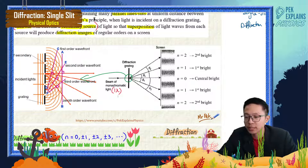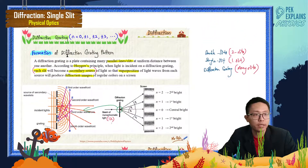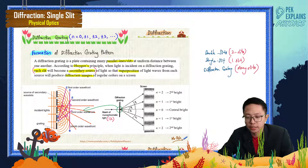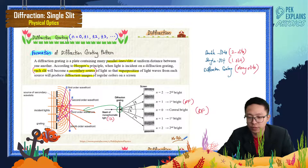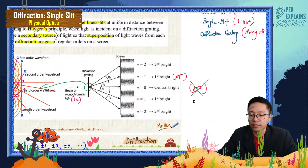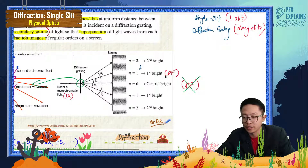For diffraction grating, we only consider the bright fringe. We don't consider the dark fringe at all — we only see bright fringes. The first order bright fringe is the first bright fringe, and it follows the order.